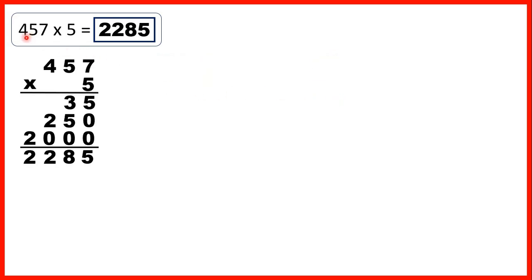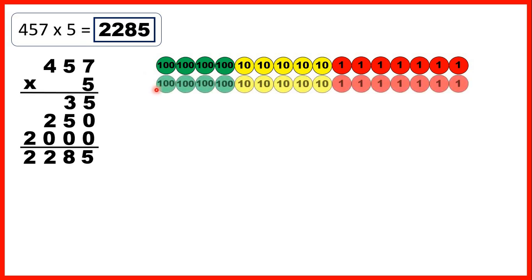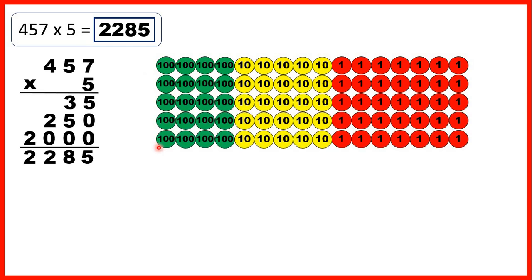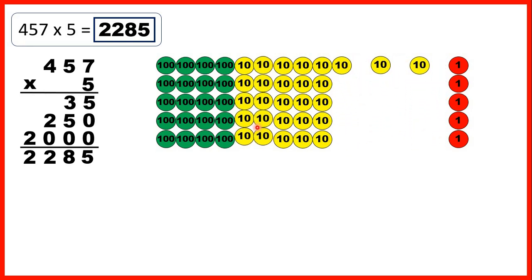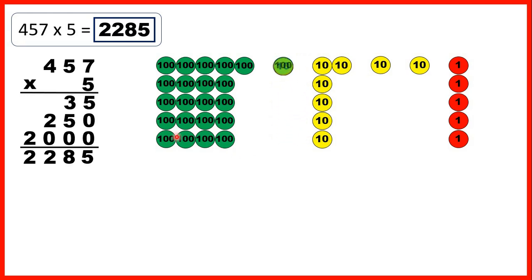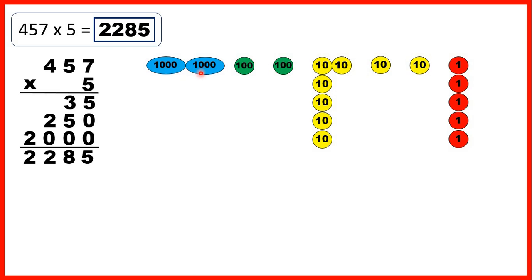Then we had four hundred and fifty-seven, so that's four hundreds, five tens, and seven ones, and we were multiplying by five, so we can show four hundred and fifty-seven five times. Now we can regroup ten ones into one ten, we can regroup ten tens into one hundred, and we can regroup ten hundreds into one thousand. When we do the regrouping, you can see that we have two thousands, two hundreds, eight tens, and five ones. So that's why our answer is two thousand, two hundred and eighty-five.